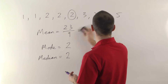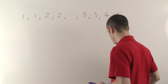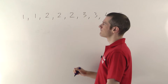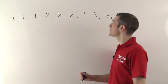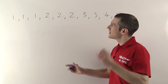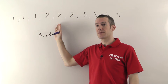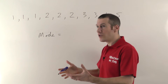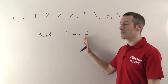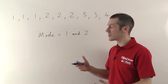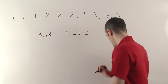For the mode special cases: we worked out the mode was two because there are more twos than any other number. But what if I add an extra one to the front? Now we've got three ones and three twos — no single number occurs more than any other. If that happens, the mode is both numbers. If it's a tie for first place, you put all the tied numbers down, so the mode is one and two.